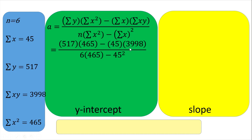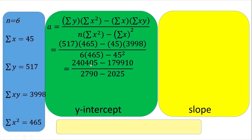Minus the square of the summation of x, so 45 squared. The first product in the numerator is 240,405; the second is 179,910. Computing the denominator using a calculator gives us 60,495 divided by 765. Therefore, our y-intercept a is 79.078 — rounded to three decimal places.